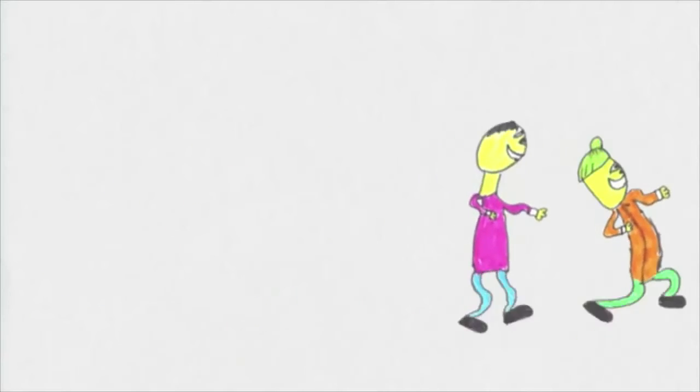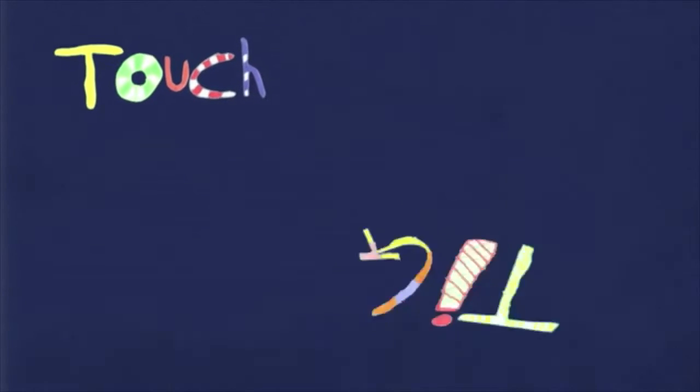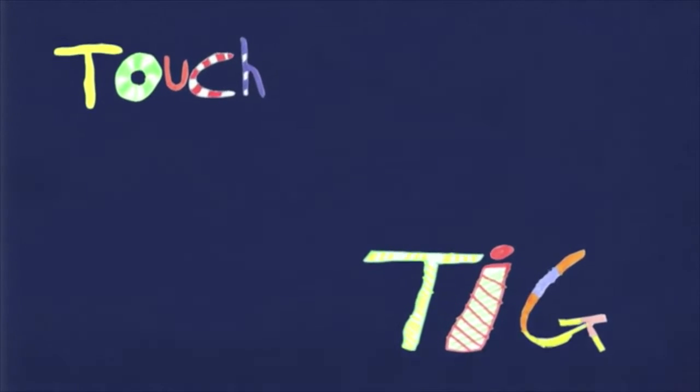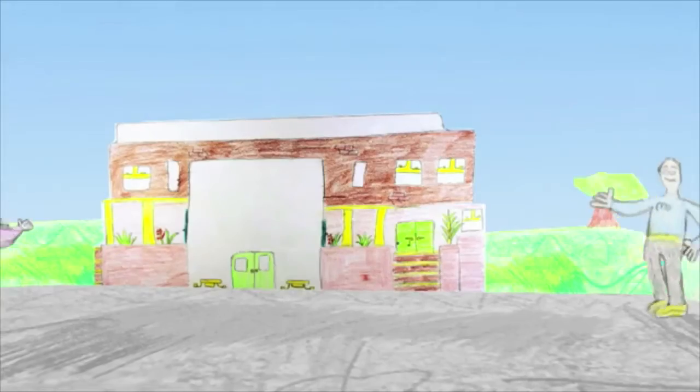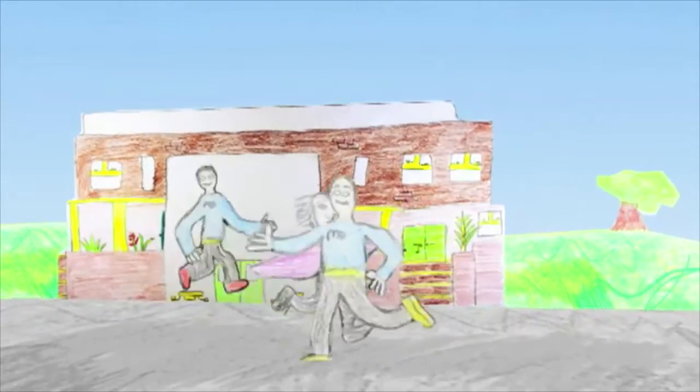There are loads of different versions of tag. Sometimes it is called touch or tig. Hundreds of years ago it was called he. You run around and if you touch someone, they're it.